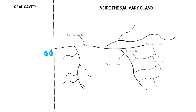It is here where the main production of saliva takes place. These end pieces, also known as acini, contain cells responsible for the production of saliva. These cells surround a central lumen where they empty their secretion, which is then carried out by the ducts.